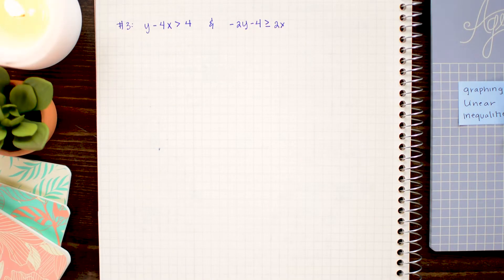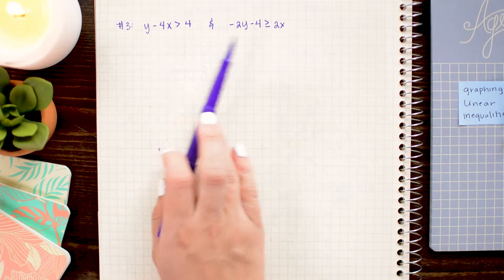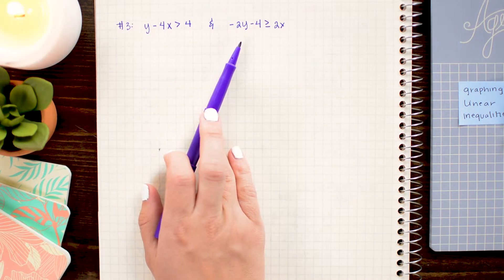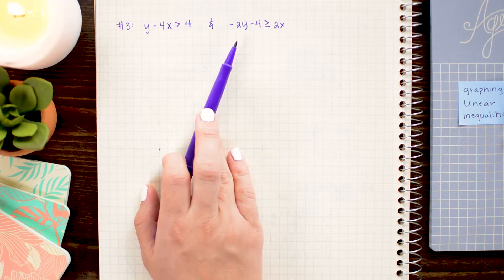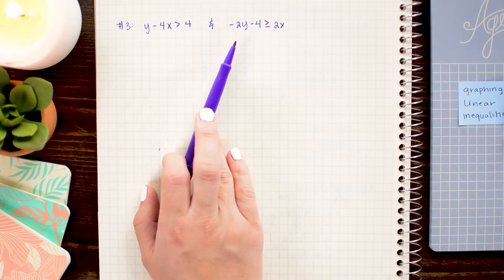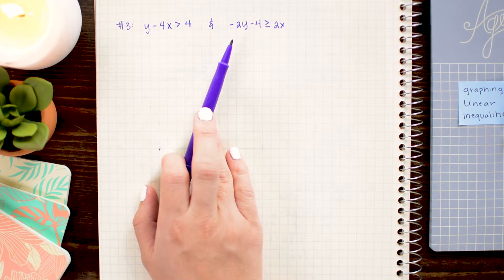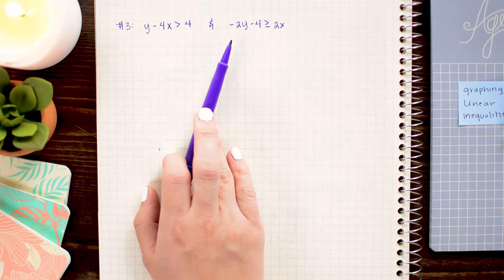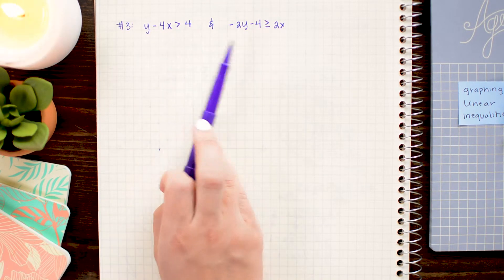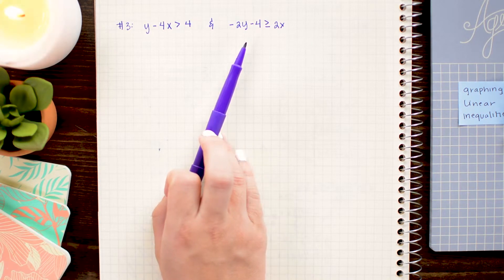The last thing I want to show you is how to graph two linear inequalities simultaneously. So sometimes they might give you a problem where you have two inequalities and they want you to shade the region that is a solution for both. So what you want to do here is begin just like our previous examples, when you're solving just one inequality and solve for y so you have a nice form to graph from. So I'm going to do that for both equations. Remembering that if I multiply or divide by a negative number at any point, I flip the symbol.